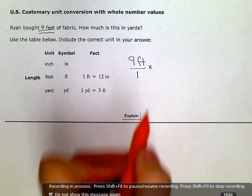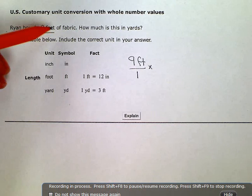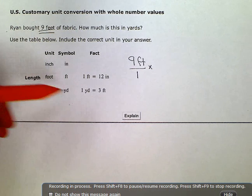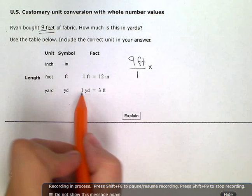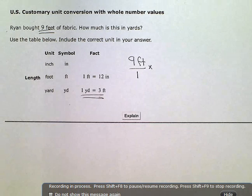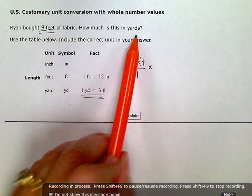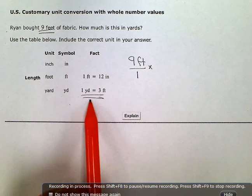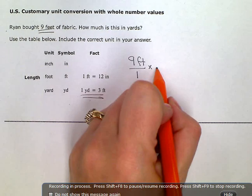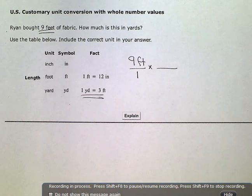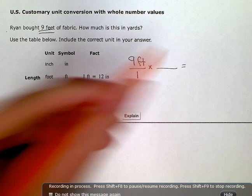If I look at my chart here, I have some conversion information that directly relates feet to yards, where I am right now and where I'm going. So I'm just going to need one conversion ratio to change nine feet into yards.